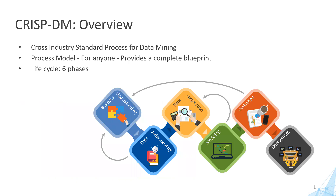Let's begin with CRISP-DM methodology. What exactly do we mean by CRISP-DM methodology? CRISP-DM stands for Cross-Industry Standard Process for Data Mining. This is a process framework which allows you to do analysis in a step-by-step way. If you're a beginner in the field of data science, it's always difficult to figure out where do you begin a data science project, how do you proceed, and how do you end a data science project?